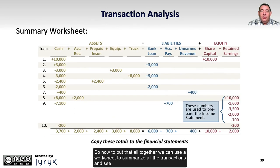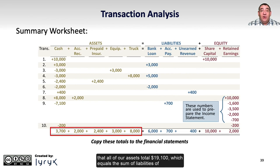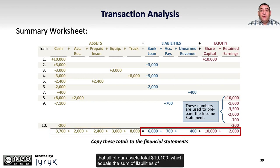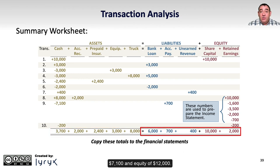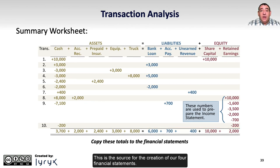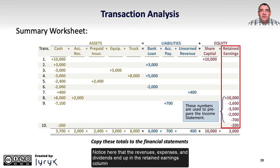To put that all together, we can use a worksheet to summarize all the transactions and see that all of our assets total $19,100, which equals the sum of liabilities of $7,100 and equity of $12,000. This is the source for the creation of our four financial statements. Notice that revenues, expenses, and dividends end up in the retained earnings column because revenues increase equity, expenses decrease equity, and dividends decrease equity.